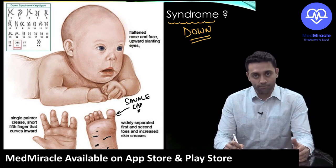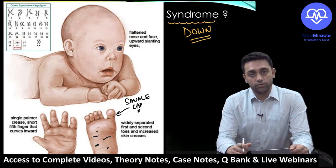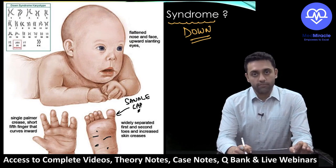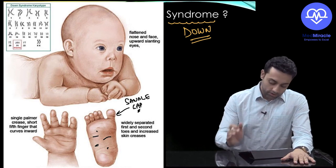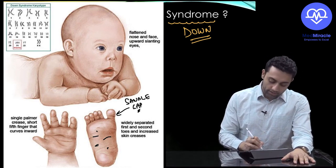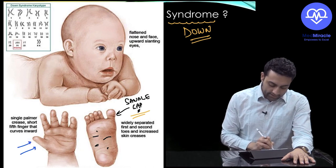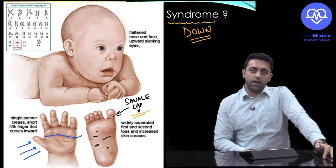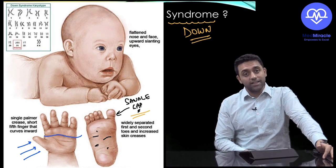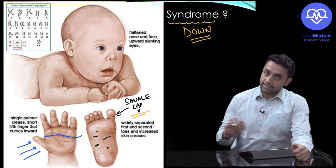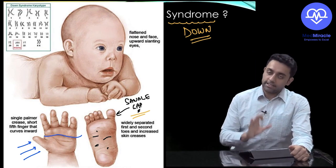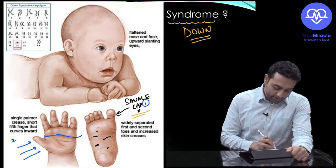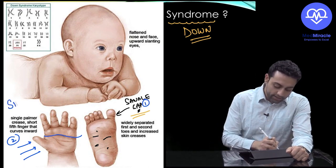There are around 55 questions in the PG book dedicated to Down syndrome and Turner syndrome, so these two syndromes need to be read carefully. In this video we'll cover Down syndrome. From the picture: number one is sandal gap, and number two is the single palmar crease. PG entrance question: is single palmar crease seen only in Down syndrome? No — it can be seen in other syndromes as well, but it is seen in Down syndrome too.